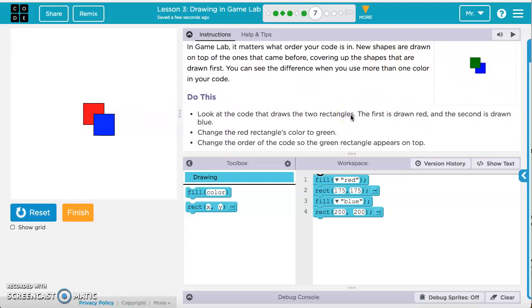So in the instructions it tells us to look at the code, it draws the two rectangles. The first is drawn red, the second is drawn blue, and we need to change the red rectangle's color to green. So if we change this fill from red to green, click on the drop down menu again, and then we need to change the order so the green rectangle appears on top.